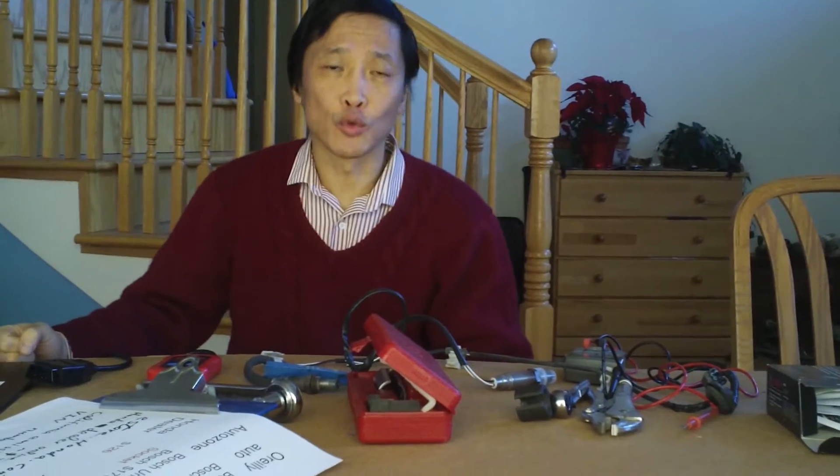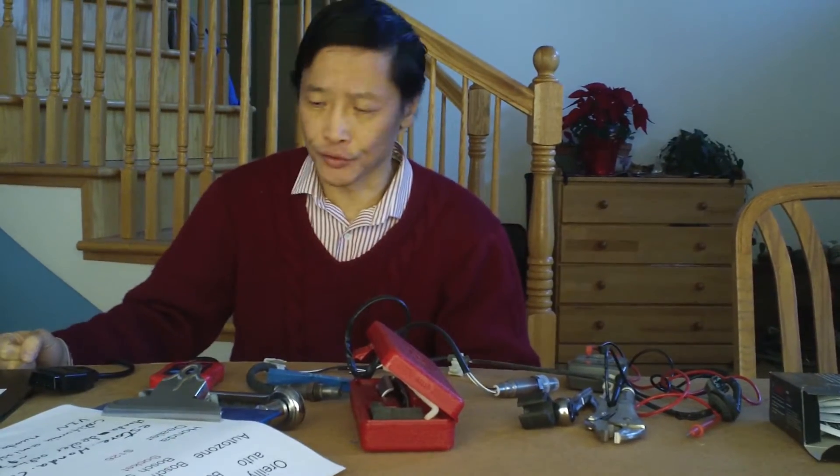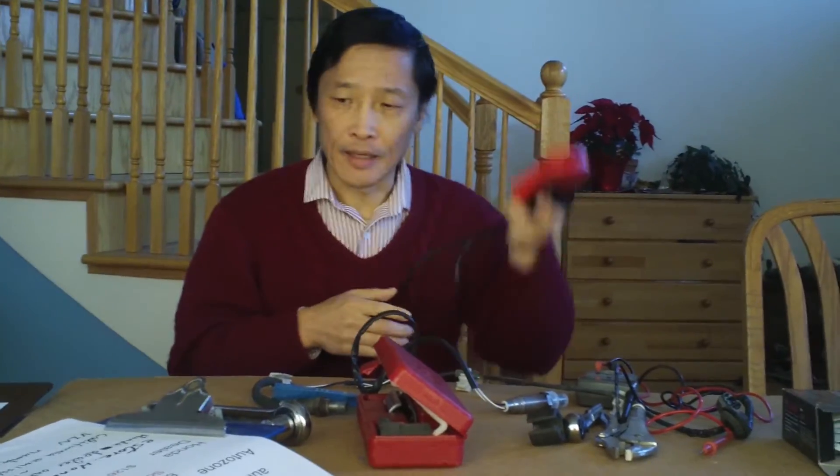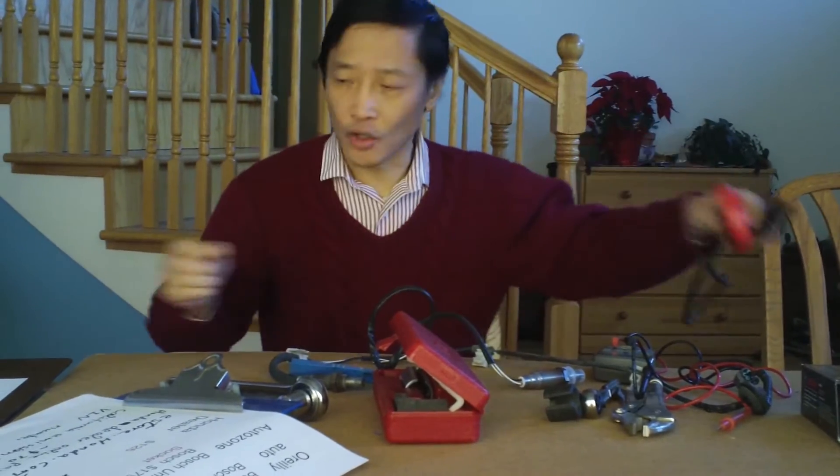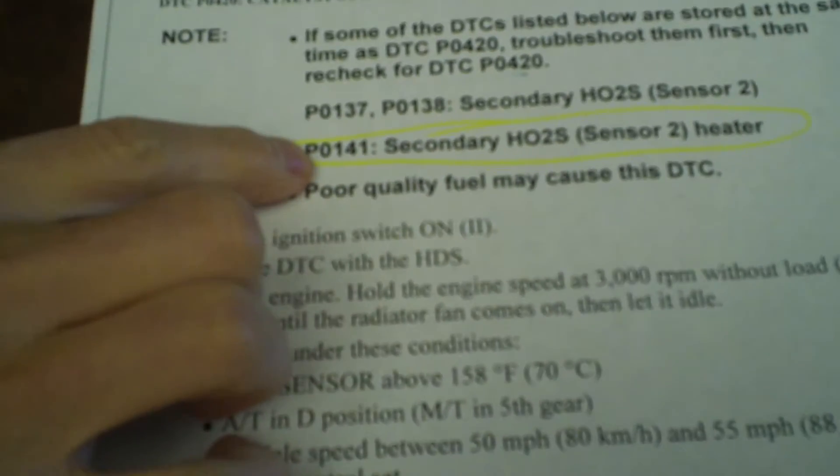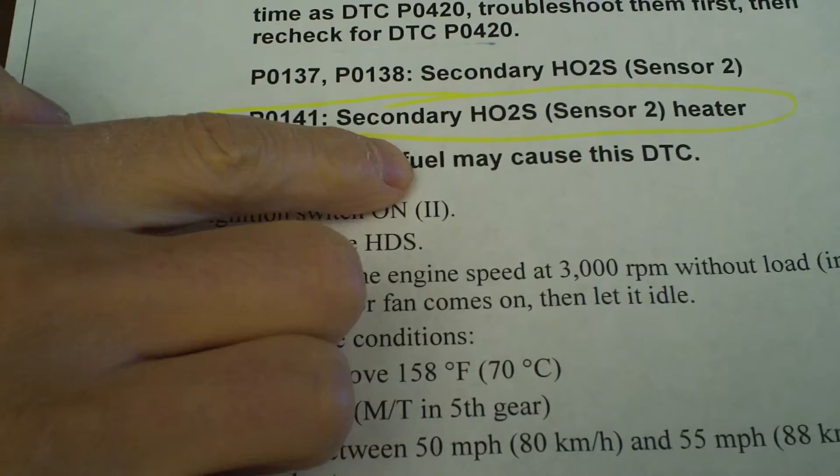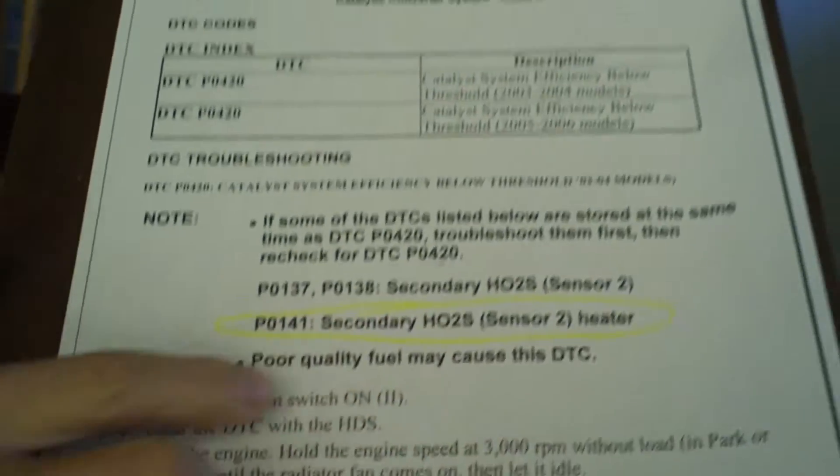Today I'm going to show you how to replace an oxygen sensor. My car started having the engine light on, and I used a scanner to scan the code. The code is P0141, which is the secondary oxygen sensor.